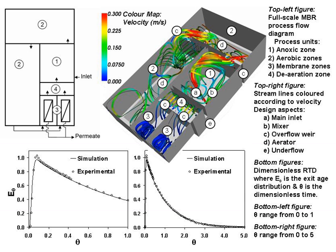It is possible to operate MBR processes at higher mixed liquor suspended solids concentrations compared to conventional settlement separation systems, thus reducing the reactor volume to achieve the same loading rate. Two MBR configurations exist: internal/submerged, where the membranes are immersed in and integral to the biological reactor, and external/sidestream, where membranes are a separate unit process requiring an intermediate pumping step.